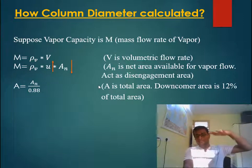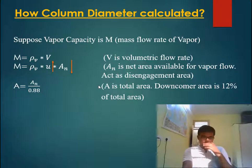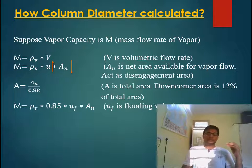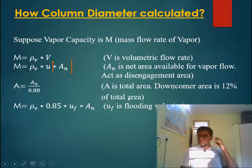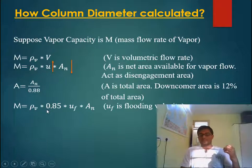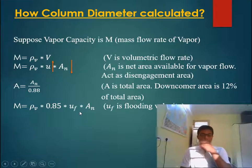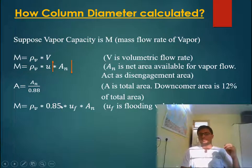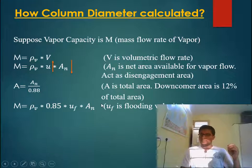We can operate up to the maximum possible point, which is the flooding velocity. We generally take a safe margin and design based on 85% of flooding velocity. So vapor capacity m equals density of vapor times 0.85 times flooding velocity times net area available for vapor flow.